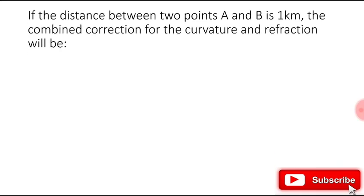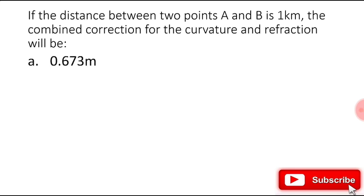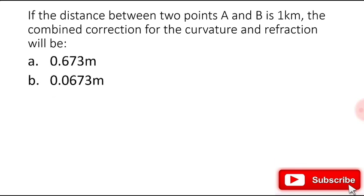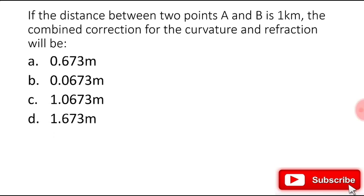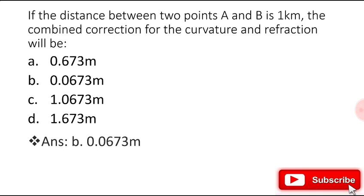If the distance between two points A and B is one kilometer, the combined correction for curvature and refraction will be: 0.673 m, 1.0673 m, 1.673 m, or 0.0673 m? The right answer is 0.0673 meters.